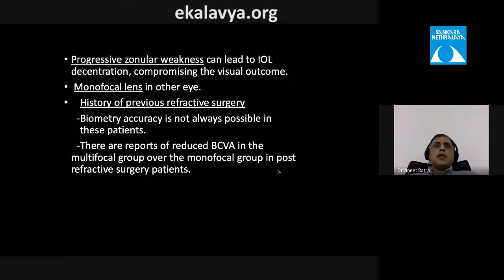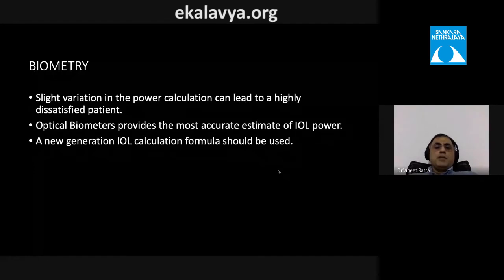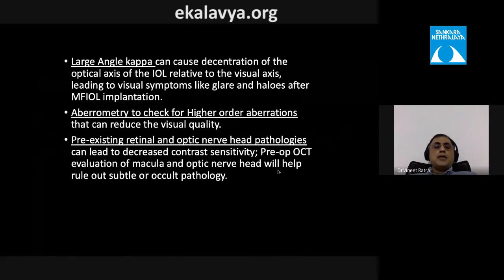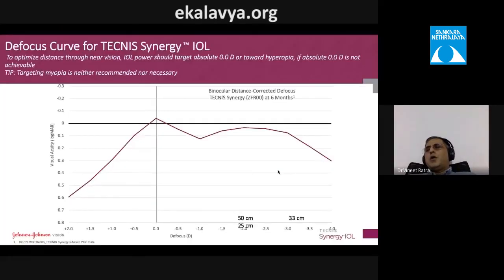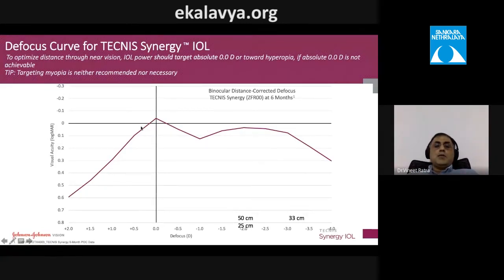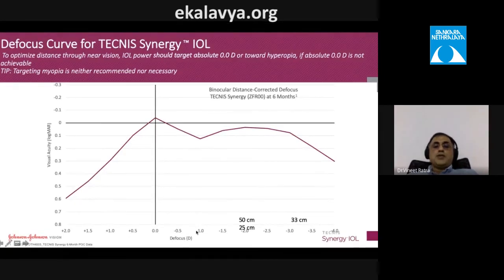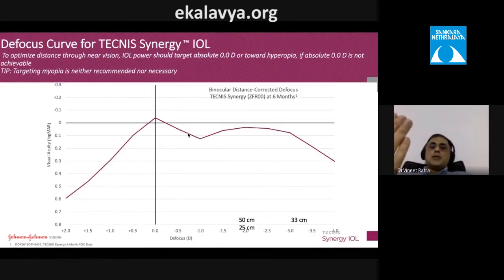Biometry targeting for multifocal IOLs: aim for emmetropia or slight hyperopia (+0.5), not myopia. On the defocus curve, a +0.5 hyperopic shift causes less than one line of vision loss, whereas a −1.0 myopic shift causes approximately one line loss and shifts the entire near range farther away. Corneal astigmatism should be less than 0.75 diopters; the Symfony can tolerate up to 1.5 diopters, beyond which a toric multifocal should be considered.